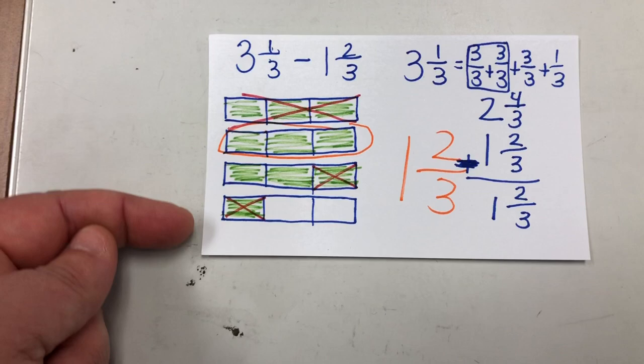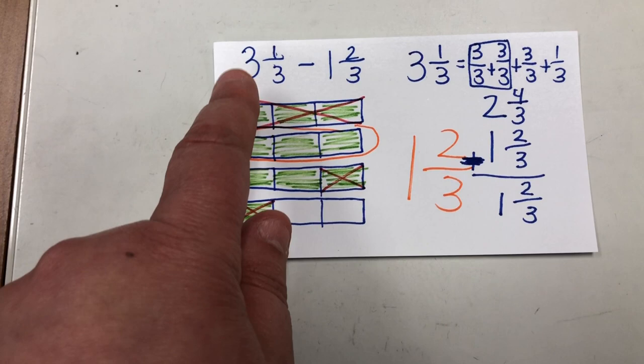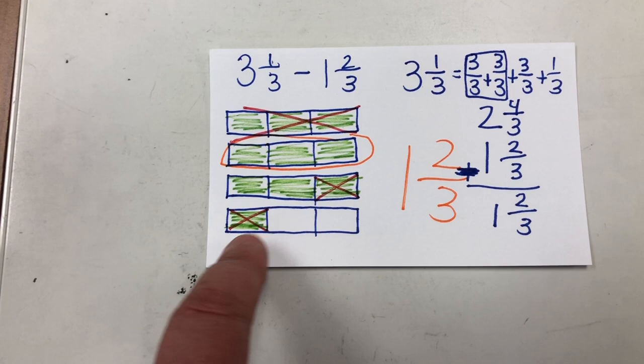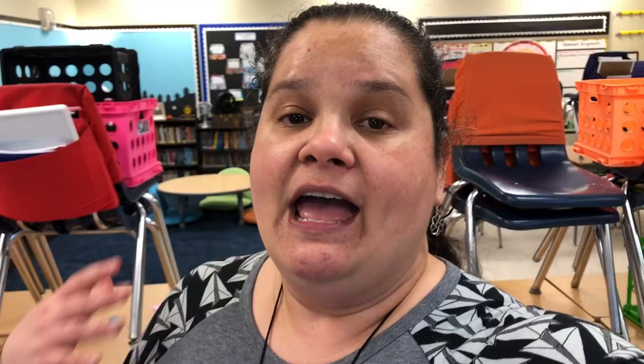Another way I showed them was by making a model — four different rectangles separated into thirds because that's our denominator. We filled in three and one-third, then subtracted one and two-thirds, and we're left with one and two-thirds as the answer, helping my visual students understand. During independent work, students who needed additional support came to my kidney table where we worked on the problems one by one. I was happy to say that at the end, a lot of them understood what they needed to do.